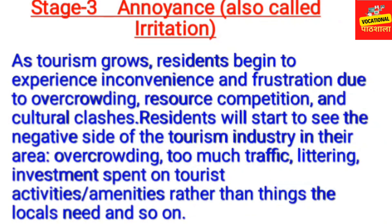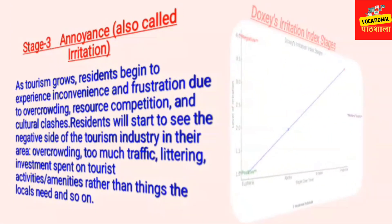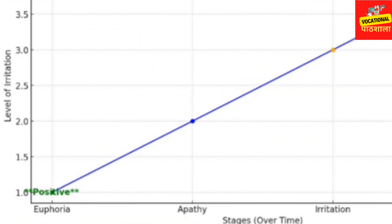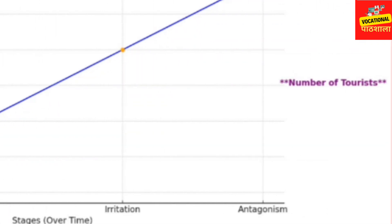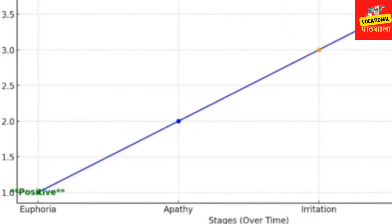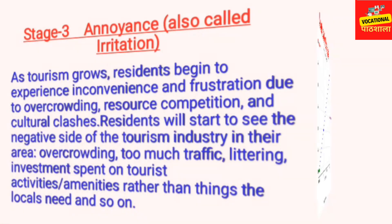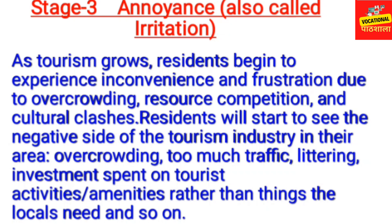Stage 3 is Annoyance, also called Irritation. As you can see on the chart, from Euphoria to Apathy there was slight neutrality, but now as we reach the Irritation stage, the time has passed and the irritation level has increased. It is negative, and the number of tourists is also increasing. The irritation level has reached around 3.0.